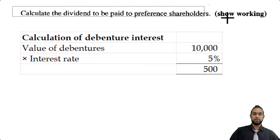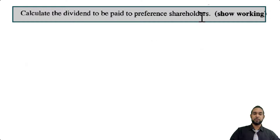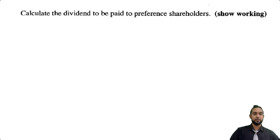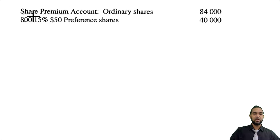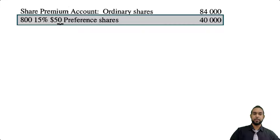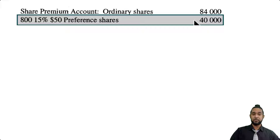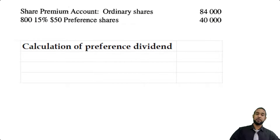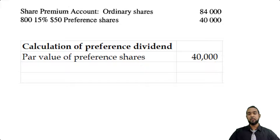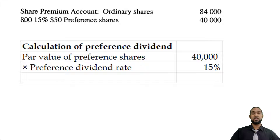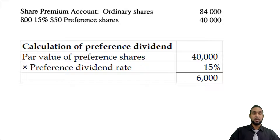Next item: calculate the preference dividend to be paid to shareholders. We have 800 preference shares at 15% with a par value totalling $40,000. So all we have to do is multiply the par value of $40,000 by the dividend rate of 15% to get $6,000.